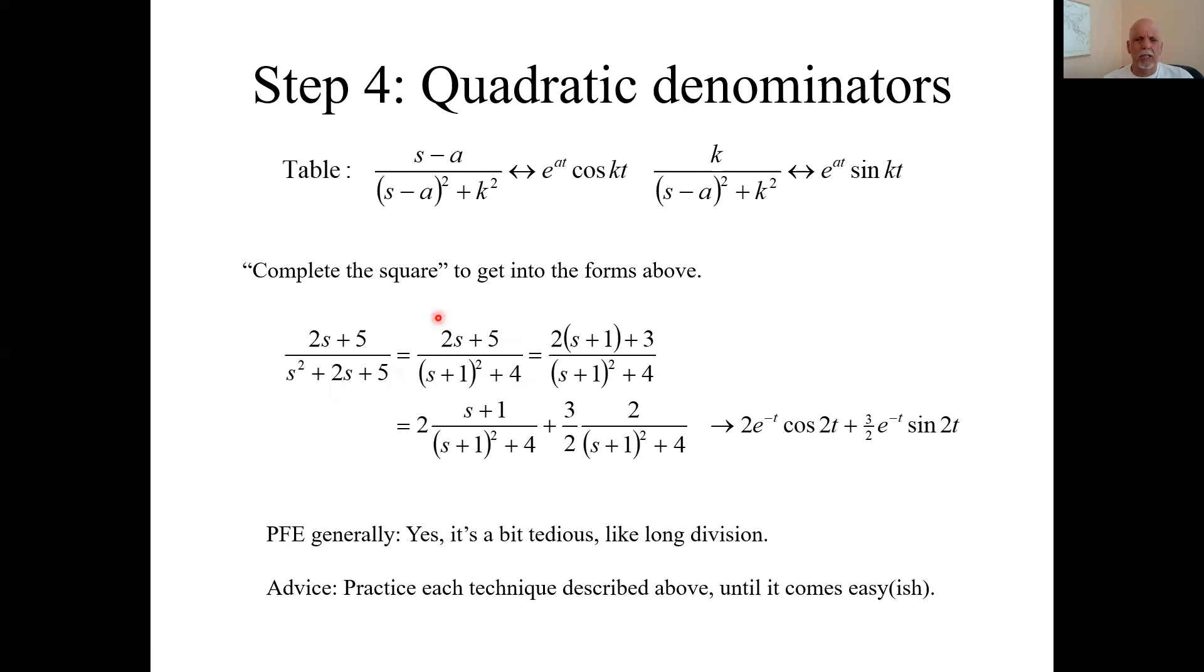You leave the numerator the same at that step. But what we need is any place there's an s up top. You really need an s plus one to match this s plus one in the denominator. So I'll say two s plus one, that will give me two s plus two. And I need to add another three to come up with the five. So I just split up the numerator.